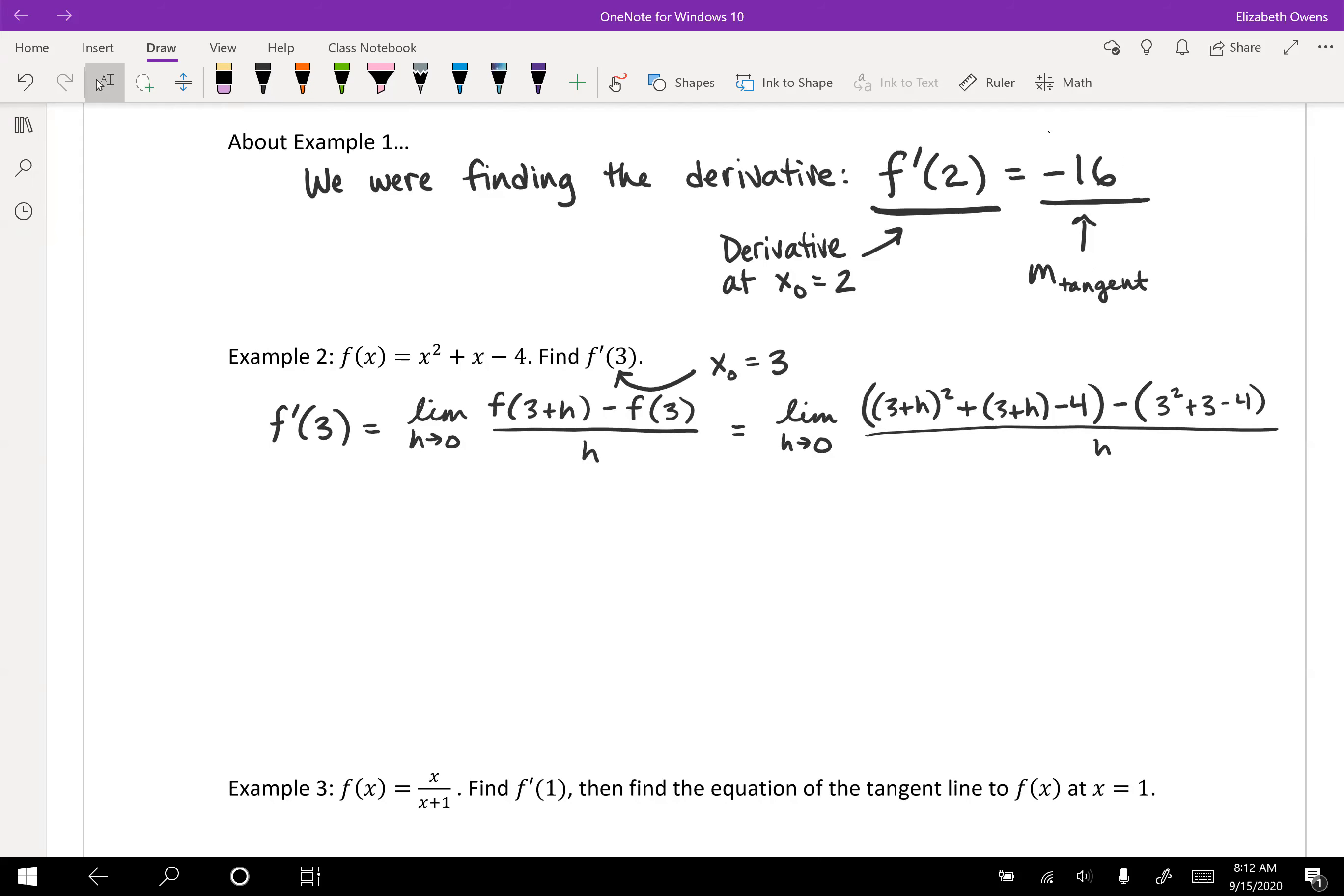Keep writing our limit as h approaches 0. And we're going to plug into our function now, we're going to plug in 3 plus h there and there for x. So that would look like 3 plus h squared plus 3 plus h minus 4. So that's f of 3 plus h, and then minus f of 3. That would be 3 squared plus 3 minus 4, all over h.